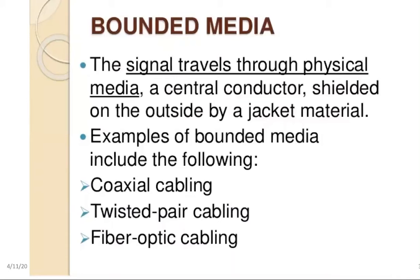You can see twisted pair cabling if you have a spare piece of electrical wire at home — just cut it open and see what's inside. You'll find coaxial cable in your dish TV connection, twisted pair cabling in your electrical cables, and fiber optic cables in internet or telephone landline connections.